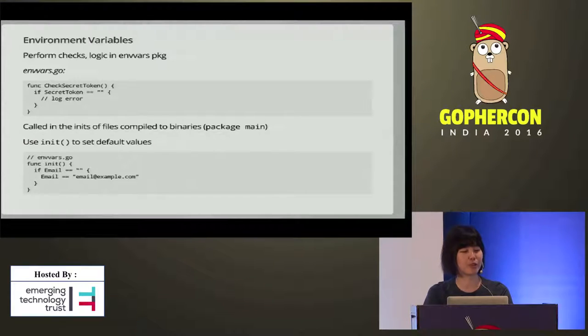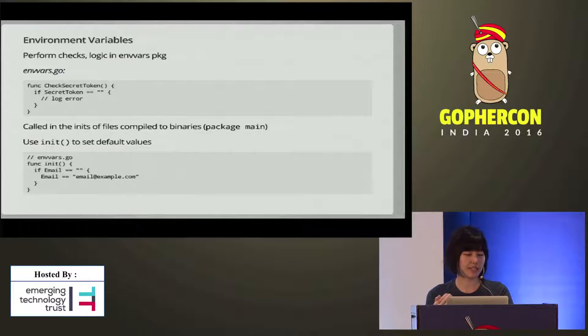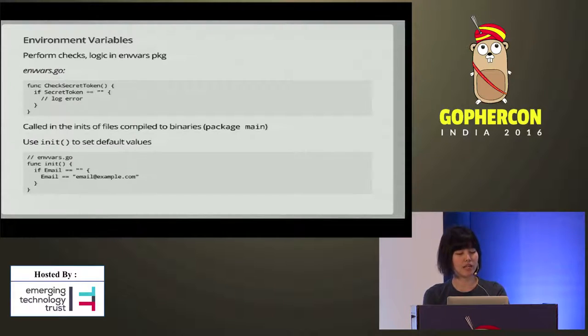For example, we can check to make sure that the secret token environment variable is defined by declaring a function. Functions like checkSecretToken or check another environment variable are usually called in the main package — i.e., files with package main — instead of within the envvars package itself. This is so that binaries that don't require the secret token environment variable won't have it imposed on them. We also call init() to set default values in this envvars package. For example, we check to make sure that the email variable is defined.